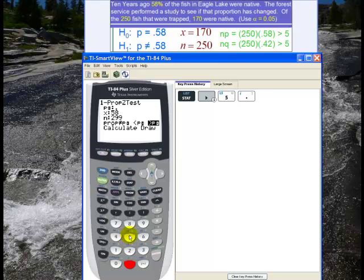And then I go down to x which was 170. So 170, and then I go down to n which is 250, so 250.